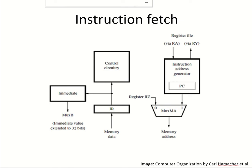Let us take a look at the instruction fetch unit. This multiplexer MA — MA stands for memory address — decides how the memory address will be passed on. If it is an instruction fetch, the address will be coming from the program counter. If it is a load instruction or a store instruction, or some operands have to be fetched and the result has been generated by the ALU in stage 3, that address is available in register RZ, and that register will pass on this result to this multiplexer MA.